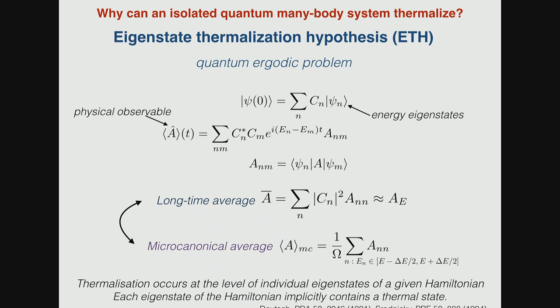Now what we want to prove is that the long-time average of some physical observable is equivalent to a microcanonical average. In quantum mechanics, the time dependence of a physical observable is given by A_nm, the matrix elements with these energy eigenstates. If you look closely at the sum, time dependence is only here. It can be split into diagonal and off-diagonal terms.